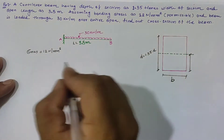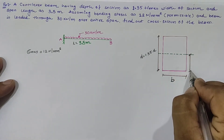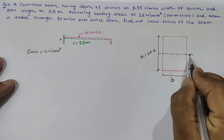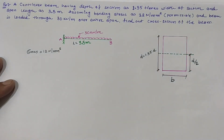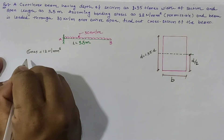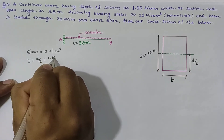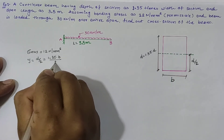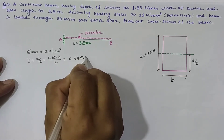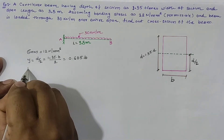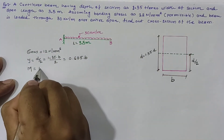For the solution, the neutral axis is located at d by 2 from the top. The extreme fiber distance y is equal to d by 2. Since depth d equals 1.35b, we get y equal to 1.35b divided by 2, which is 0.675b. So we use y equal to 0.675b.